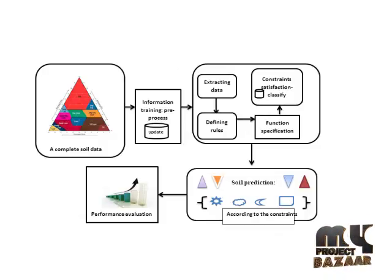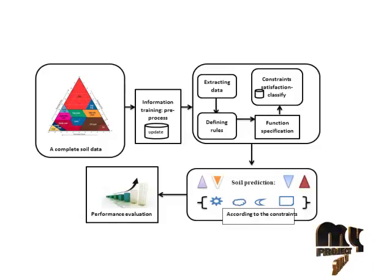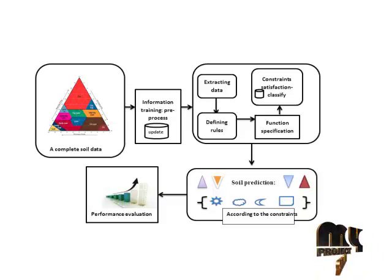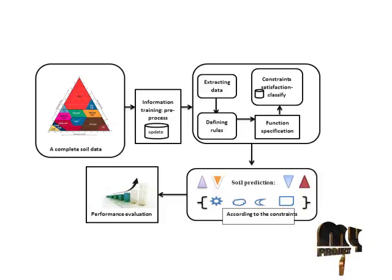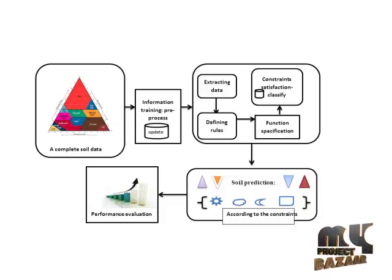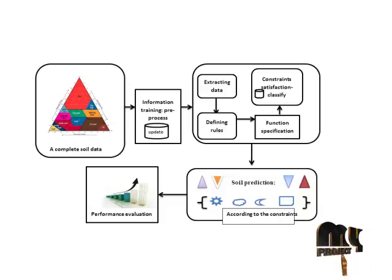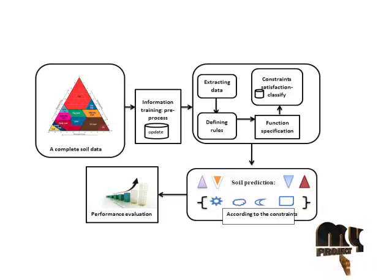Now let's look at the data flow diagram. First, we see the complete soil data, which goes to the information training preprocess. The soil data is completed and updated in a 3D dataset, then it goes to extract data.